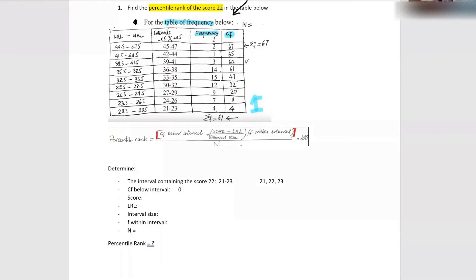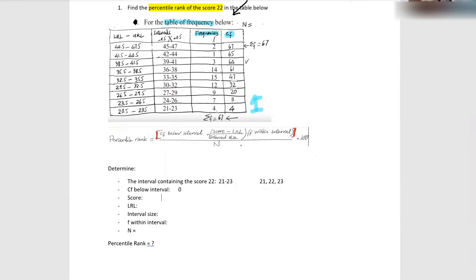Most of you got the right answer. If you don't have any items in that interval, then the frequency is zero, which means the cumulative frequency is also zero. If you don't have anything, it's going to be zero.